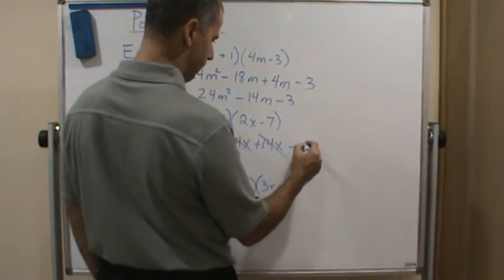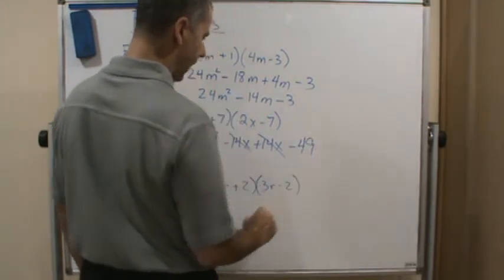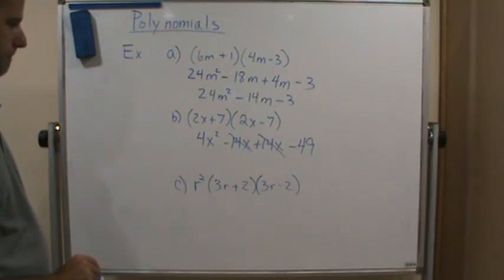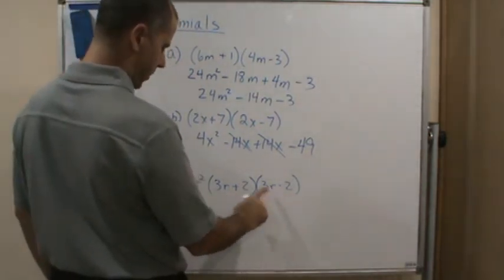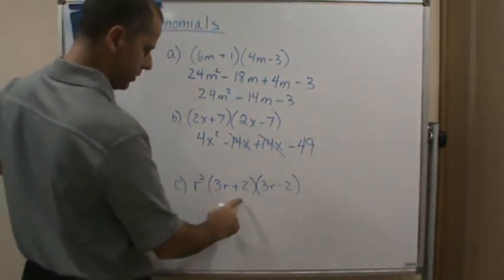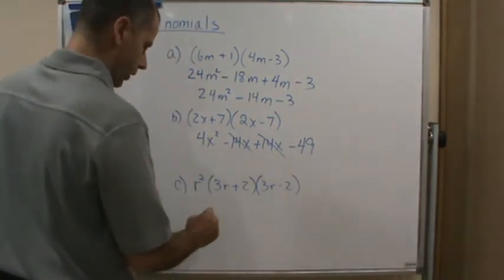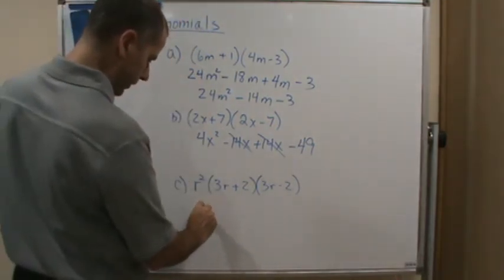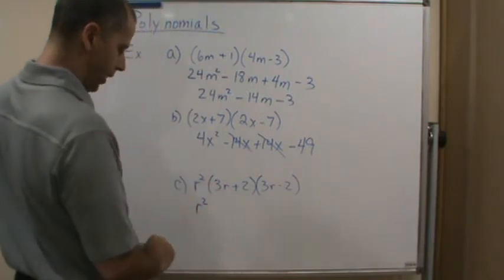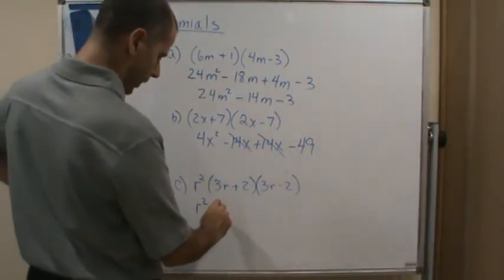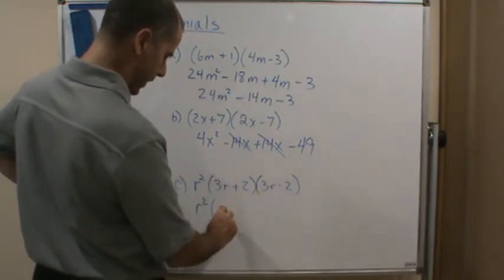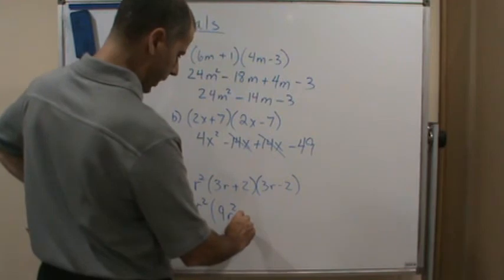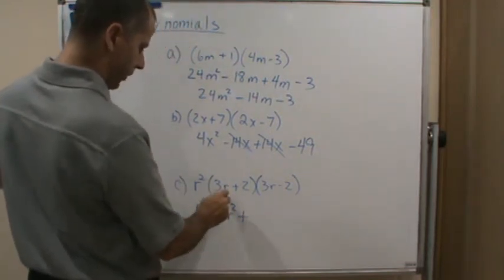Let's do the last one. Notice that I'm going to do these two first, and then we have a third one. So let's do these two first. I'm going to write this out and carry the r squared along. This gives me r squared times: 3r times 3r is 9r squared, and then 3r times negative 2 gives me negative 6r.